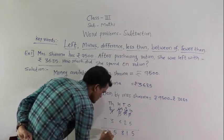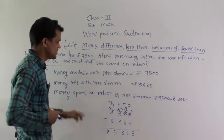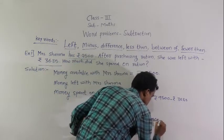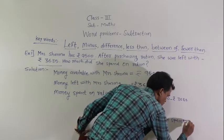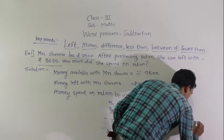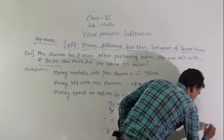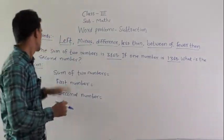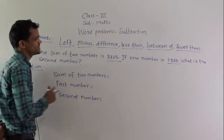Write the final statement: Mrs. Sharma spent rupees 5815 on ration. Example 2: The sum of two numbers is 3865. If one number is 1365, what is the second number?